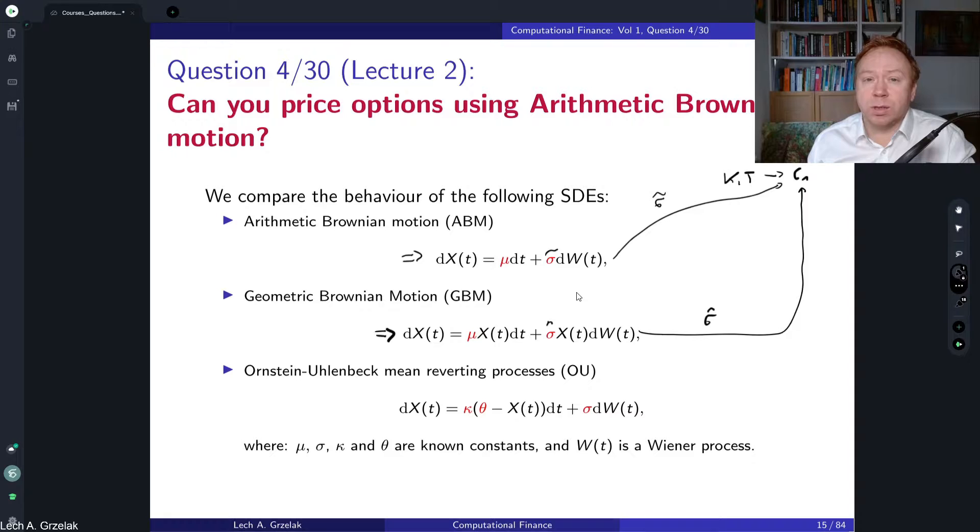The difference we will see in the sensitivities, in the Greeks. So this model assumes that paths are non-negative. We have only positive stock paths for geometric Brownian motion. For arithmetic Brownian motion, stock realizations can become negative and this is very unrealistic.